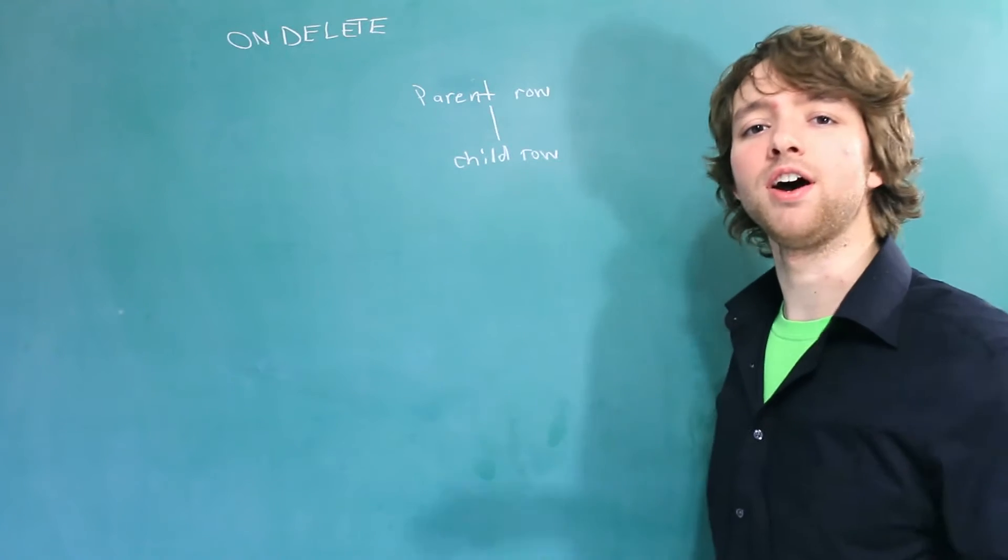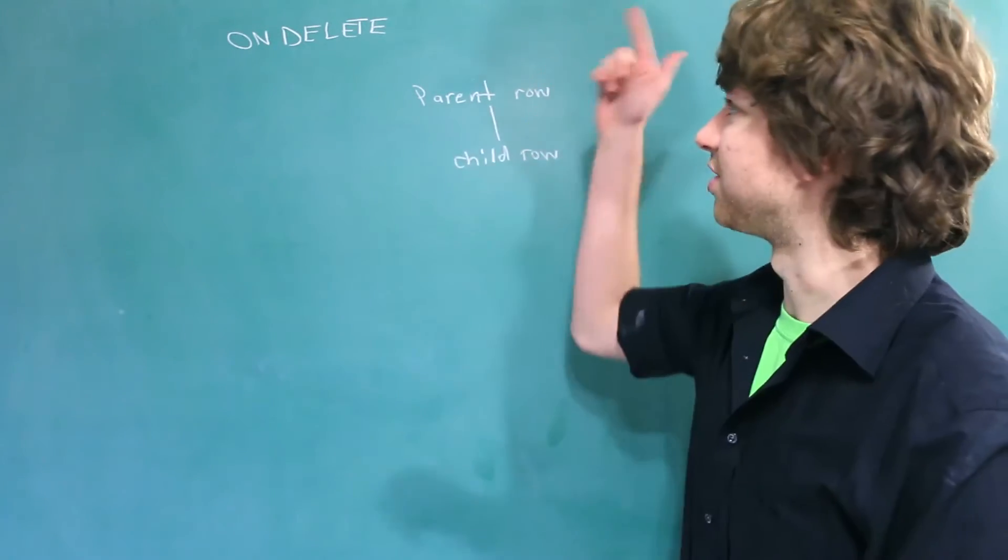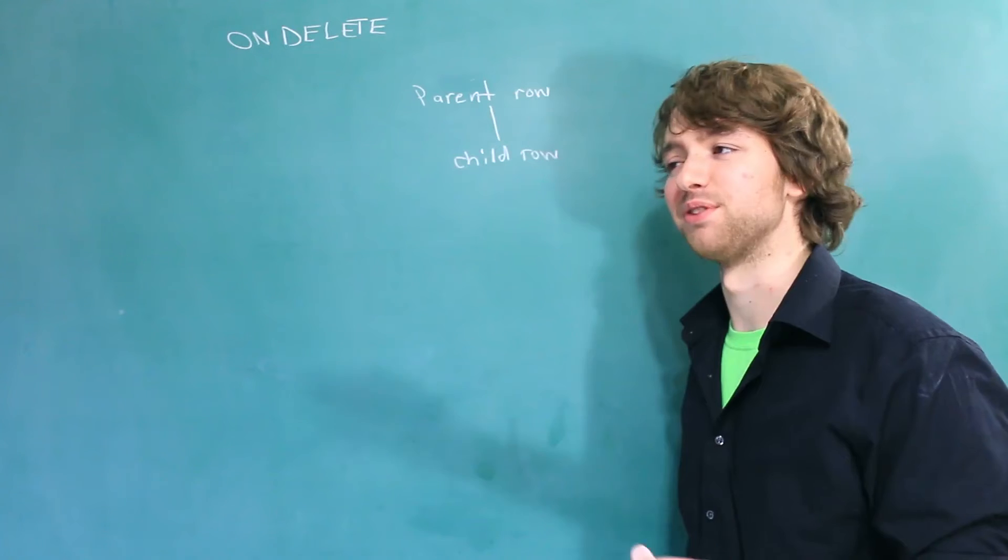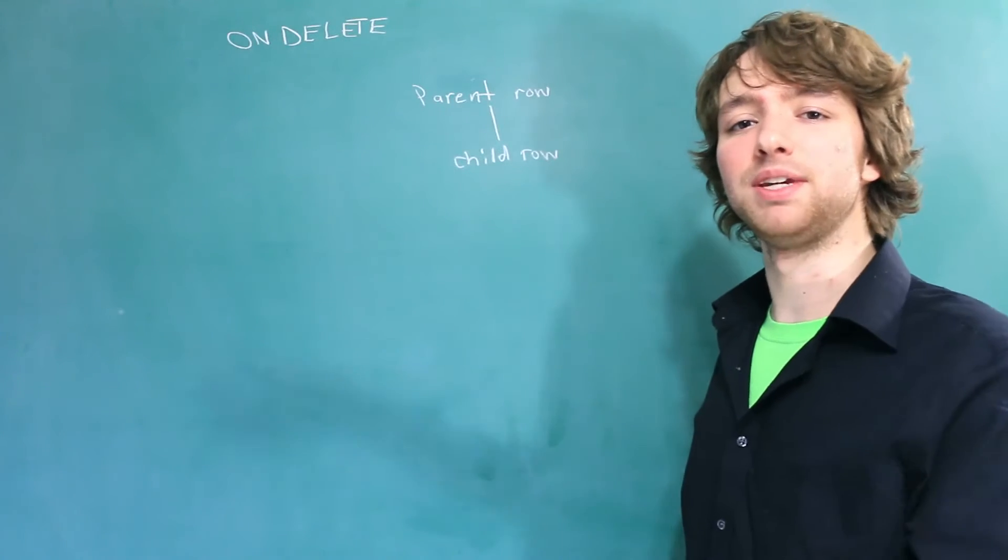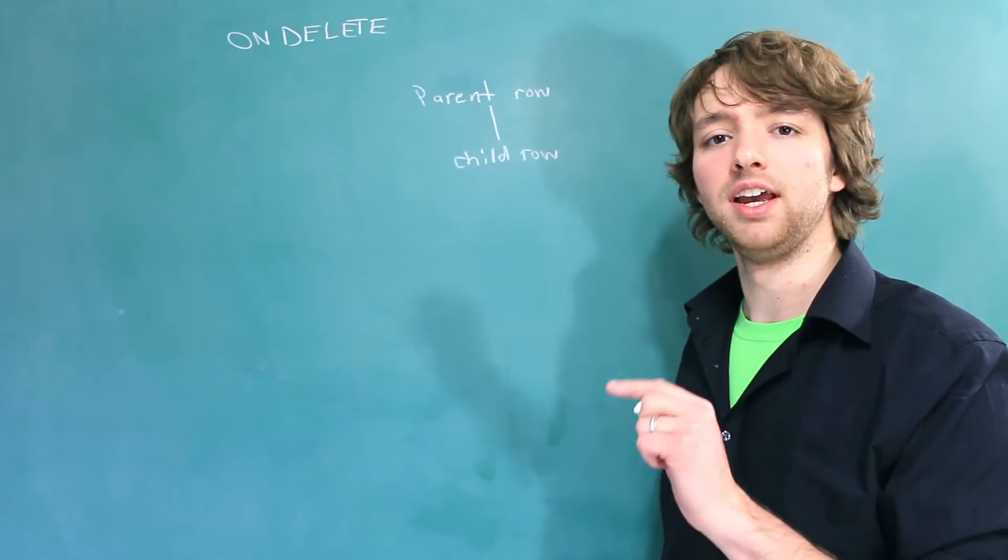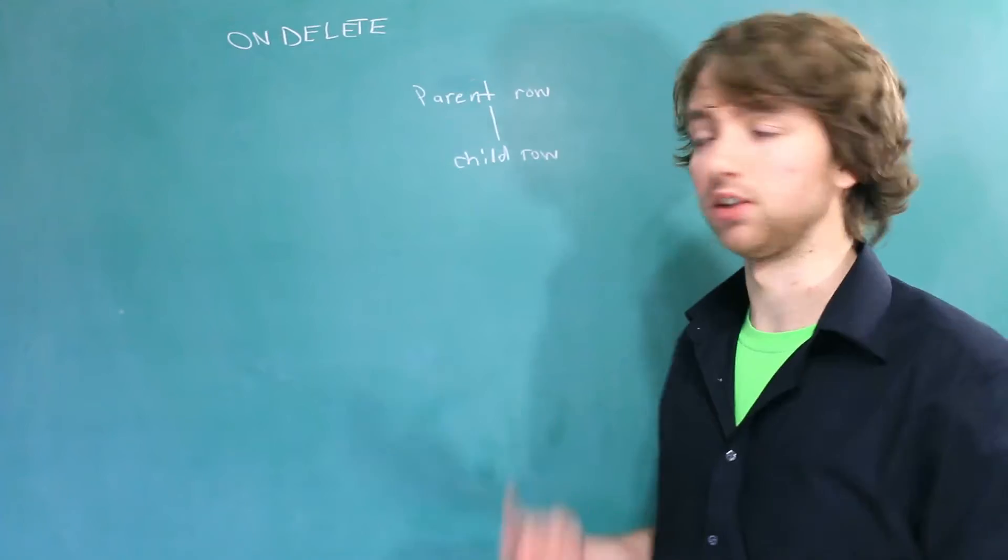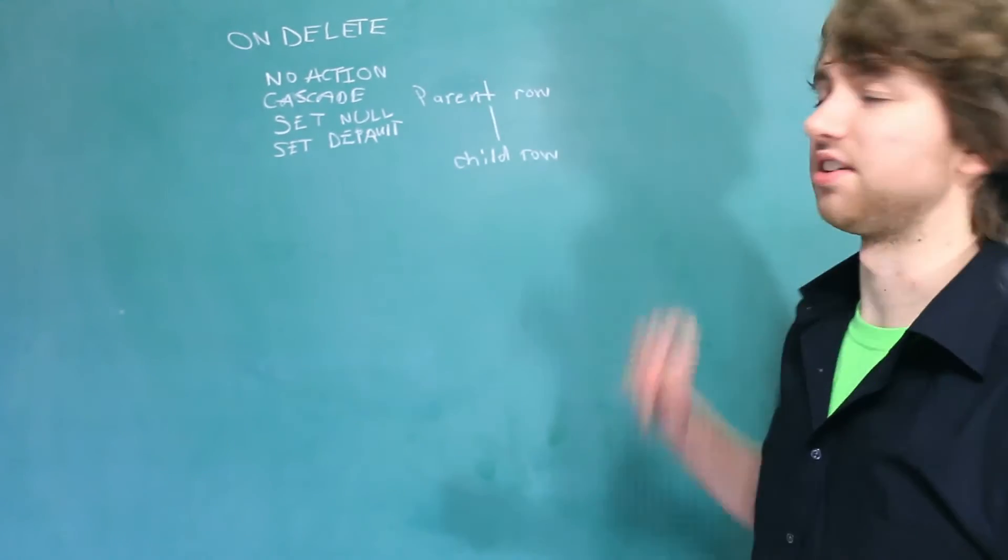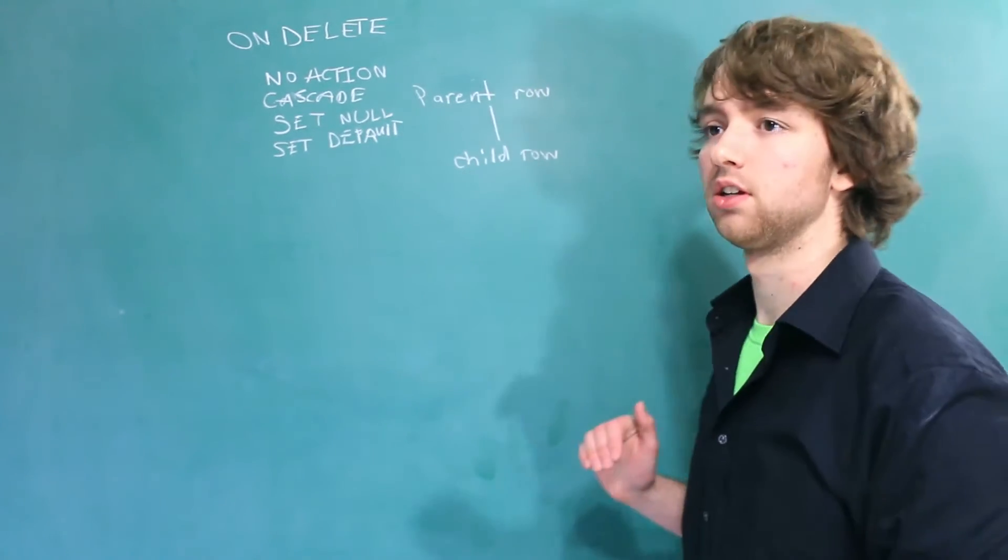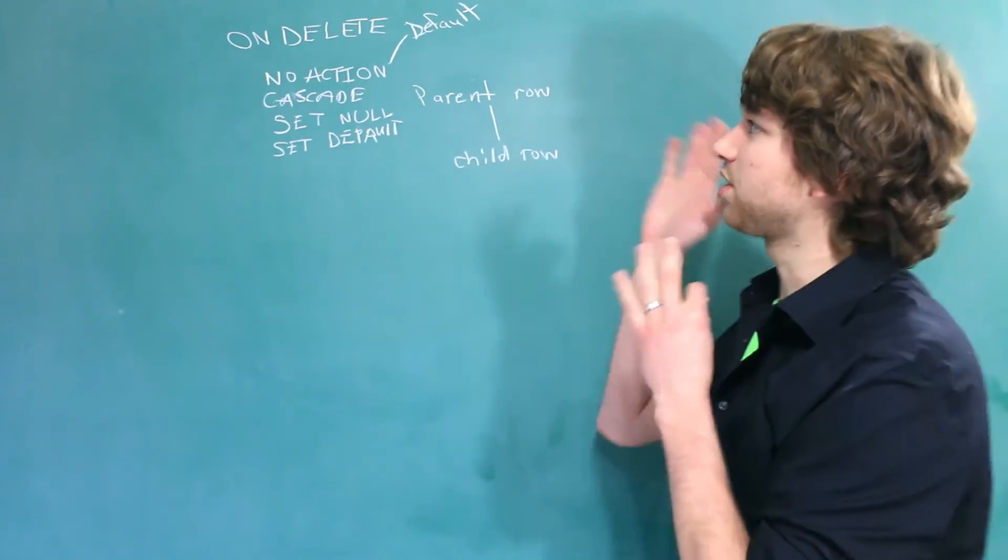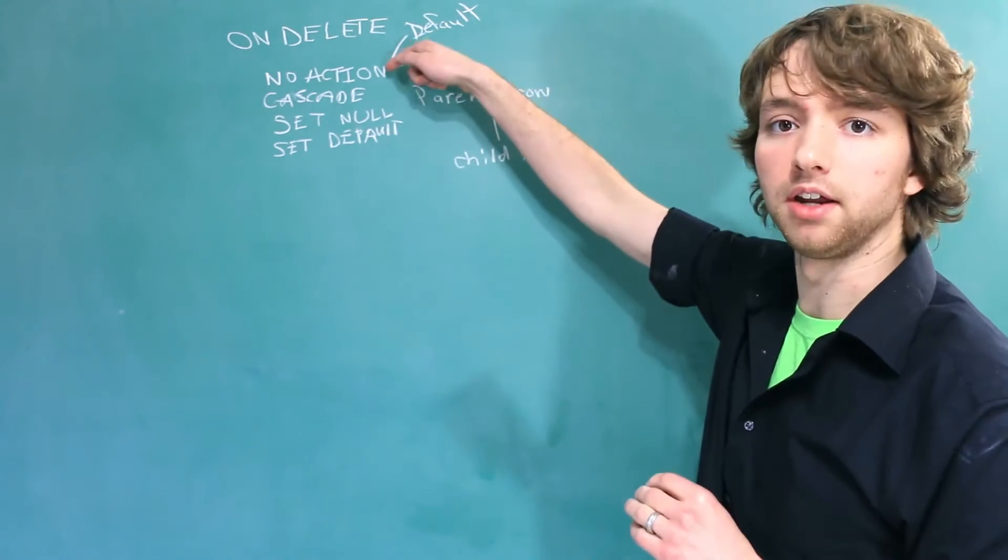And I bet you cannot guess what clause is used to configure that. It's ON DELETE. So ON DELETE can be added after we define our foreign keys, and we can say what happens when we delete the parent. And there's four main options in SQL Server: no action, cascade, set null, and set default. We are going to discuss each one of these in a little bit of detail. The first one is no action, that is actually the default. So if you don't say anything and you just say this is a foreign key that references this column, this is the one that's going to be applied.